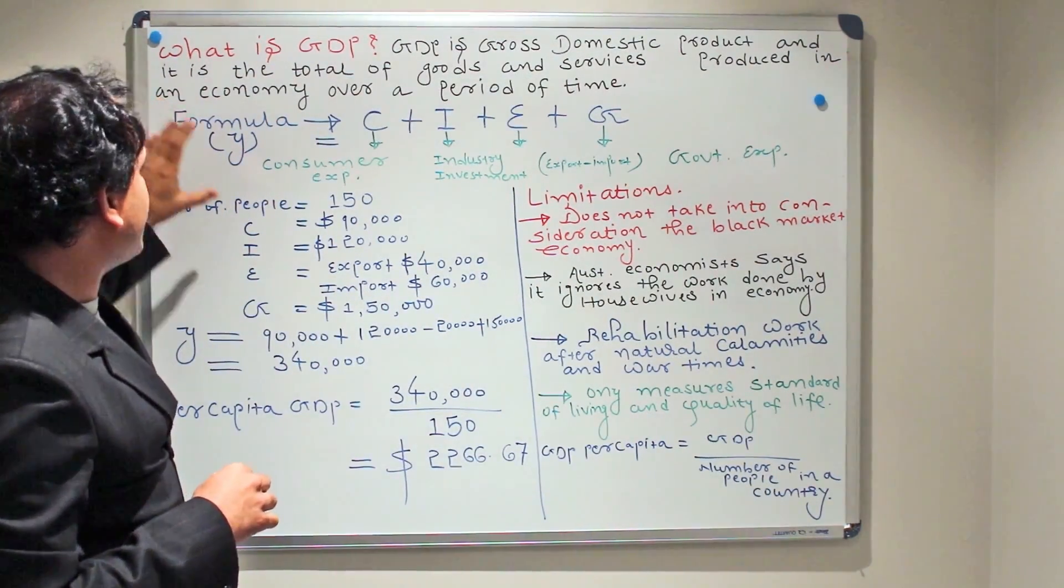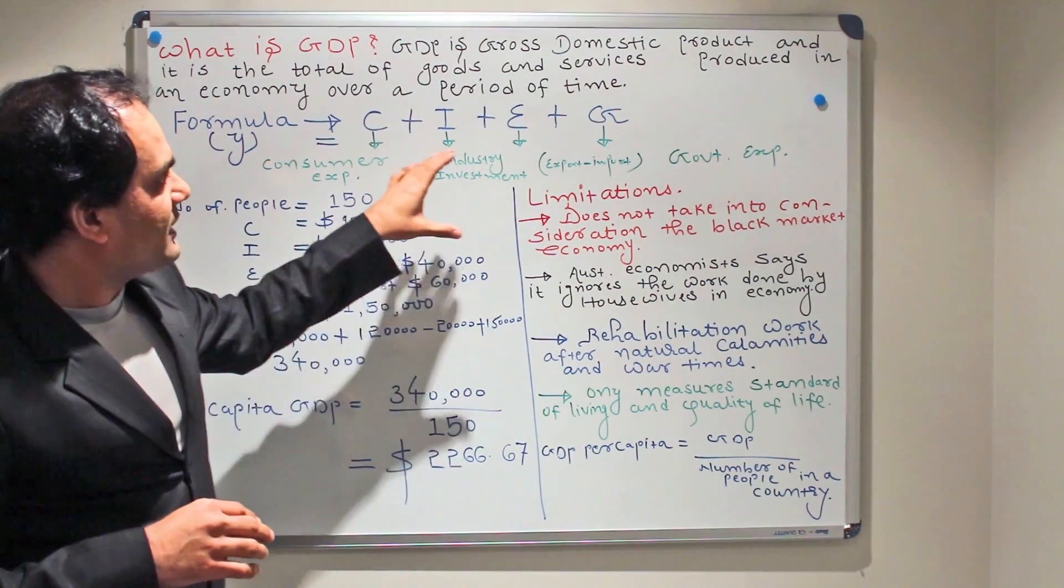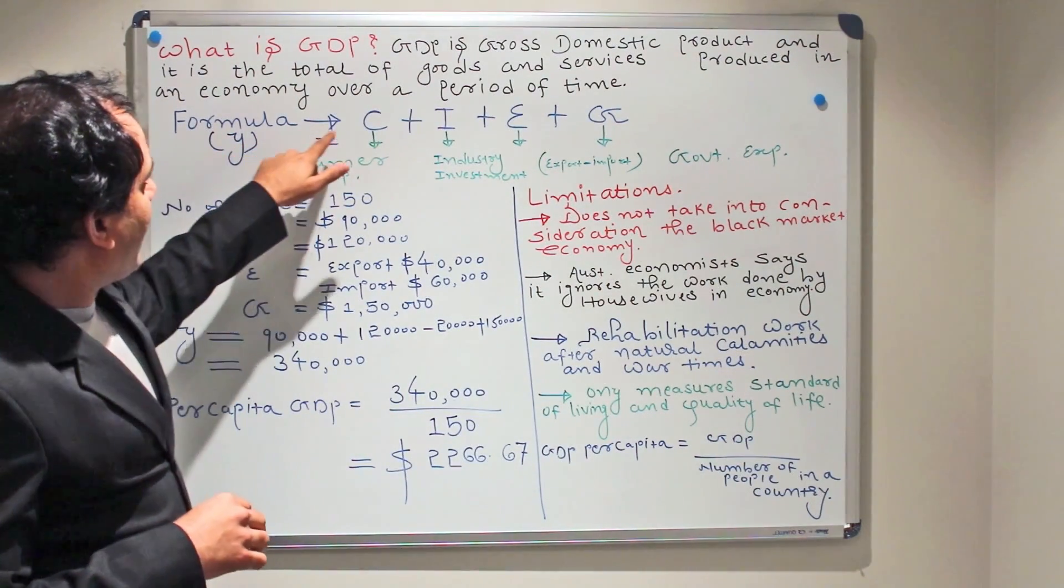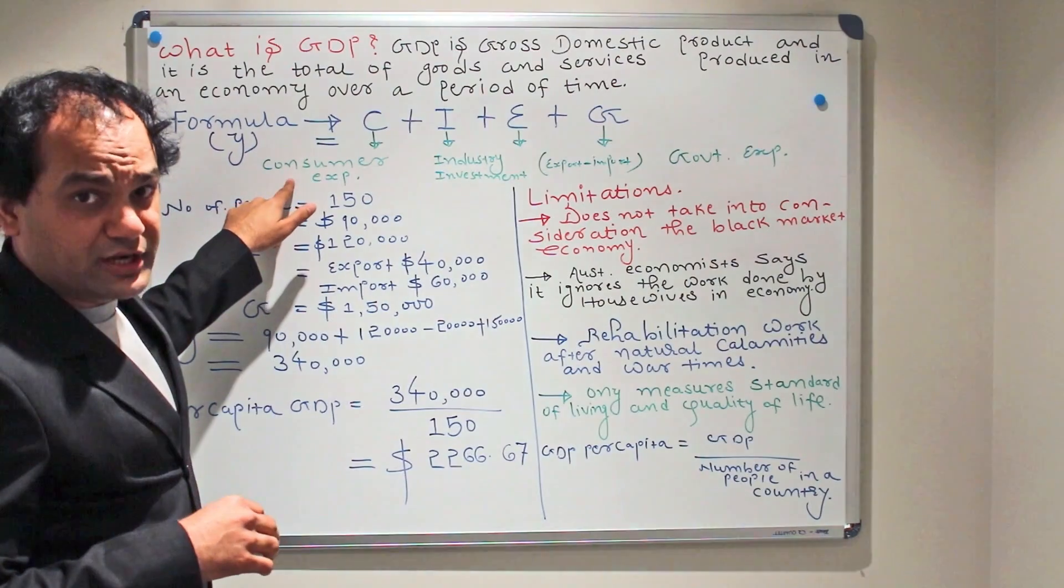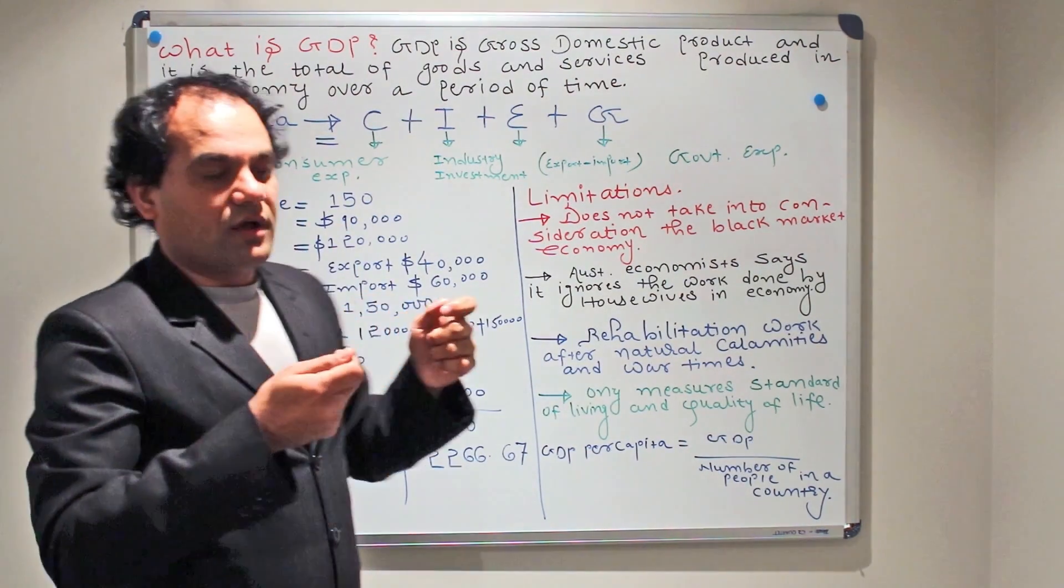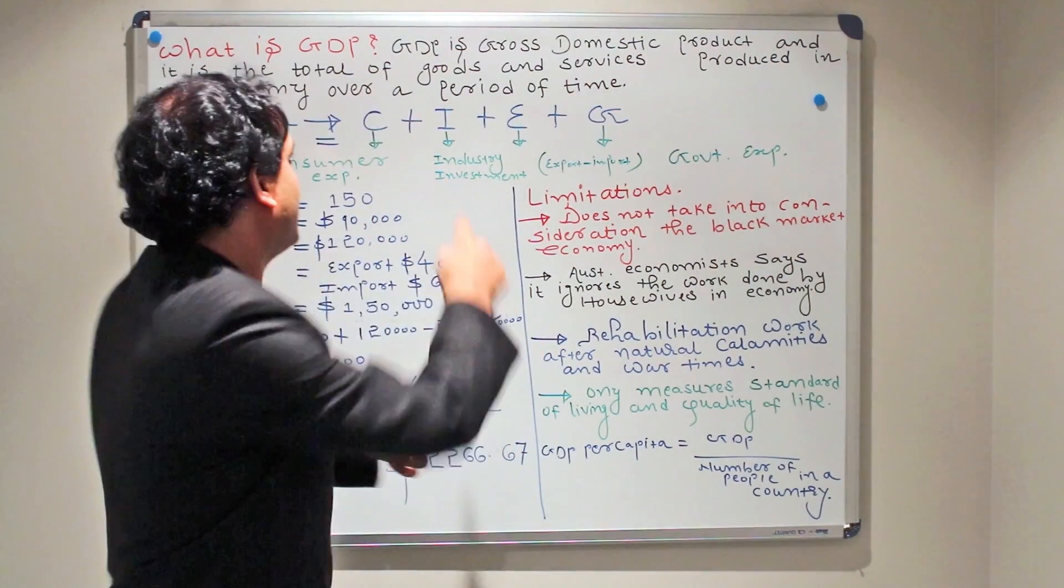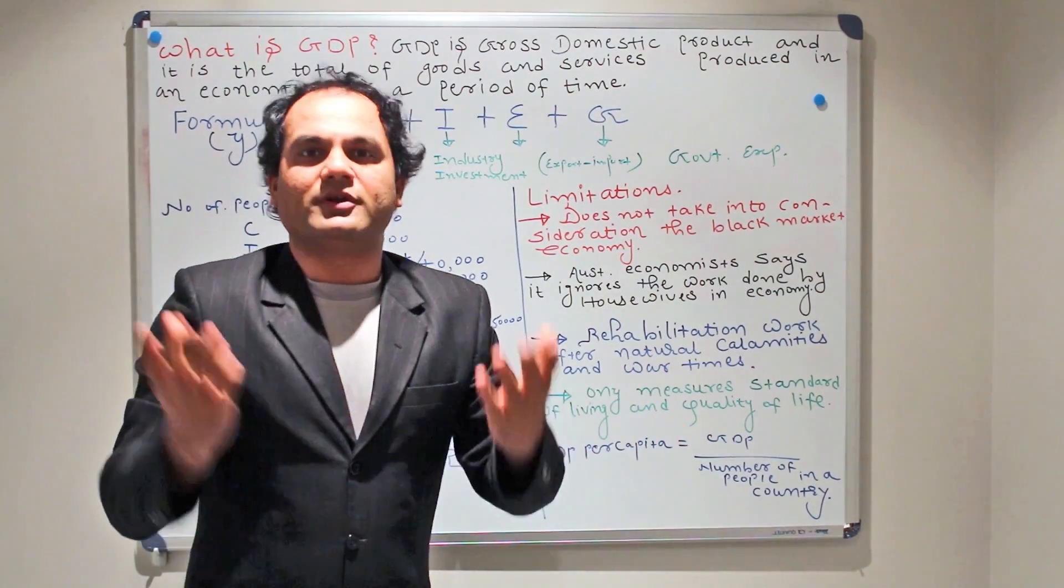How do we really calculate GDP? There is a very famous formula for calculating GDP and it says Y = C + I + E + G. Y represents GDP. The formula itself represents C for consumer expenditure. Whenever we go to buy something in the market, we are issued with a receipt. That receipt is calculated in consumer expenditure.